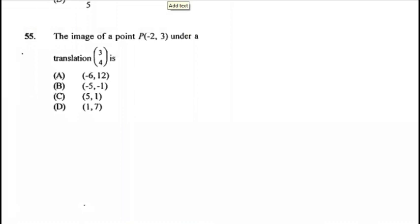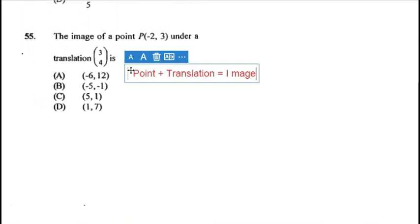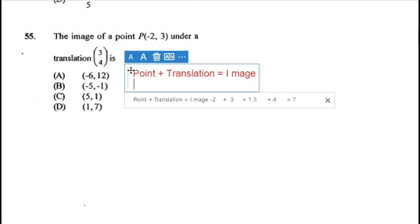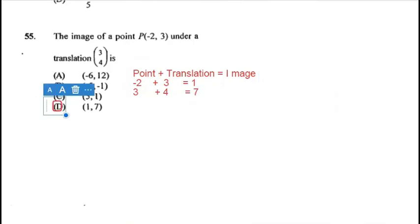Question 55: the image of point P under a translation. Using the formula: point + translation = image. The point is (−2, 3) and the translation is (3, 4): −2 + 3 = 1, and 3 + 4 = 7. So the image is (1, 7). Answer for 55 is D.